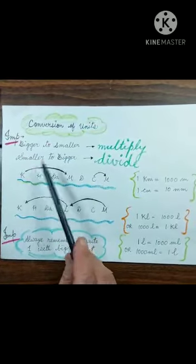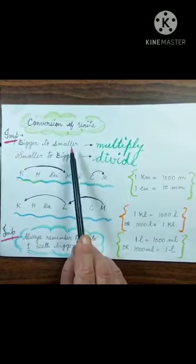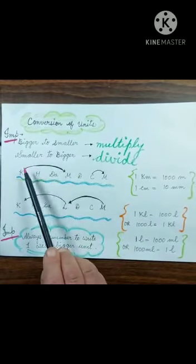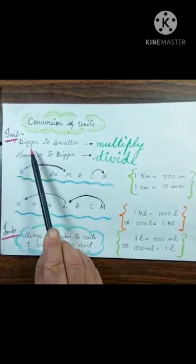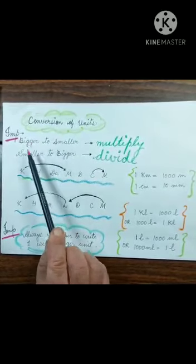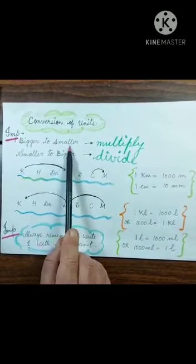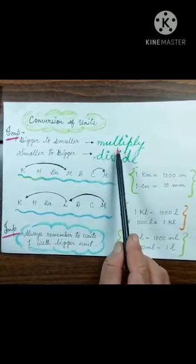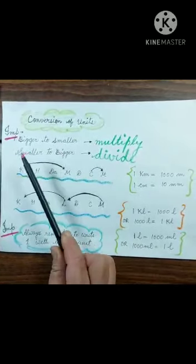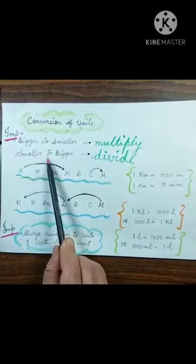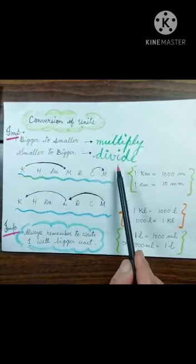Now conversion of units — how we will convert from one unit to another. Bigger to smaller: you have to multiply. When you have to convert smaller to bigger, then you have to divide.